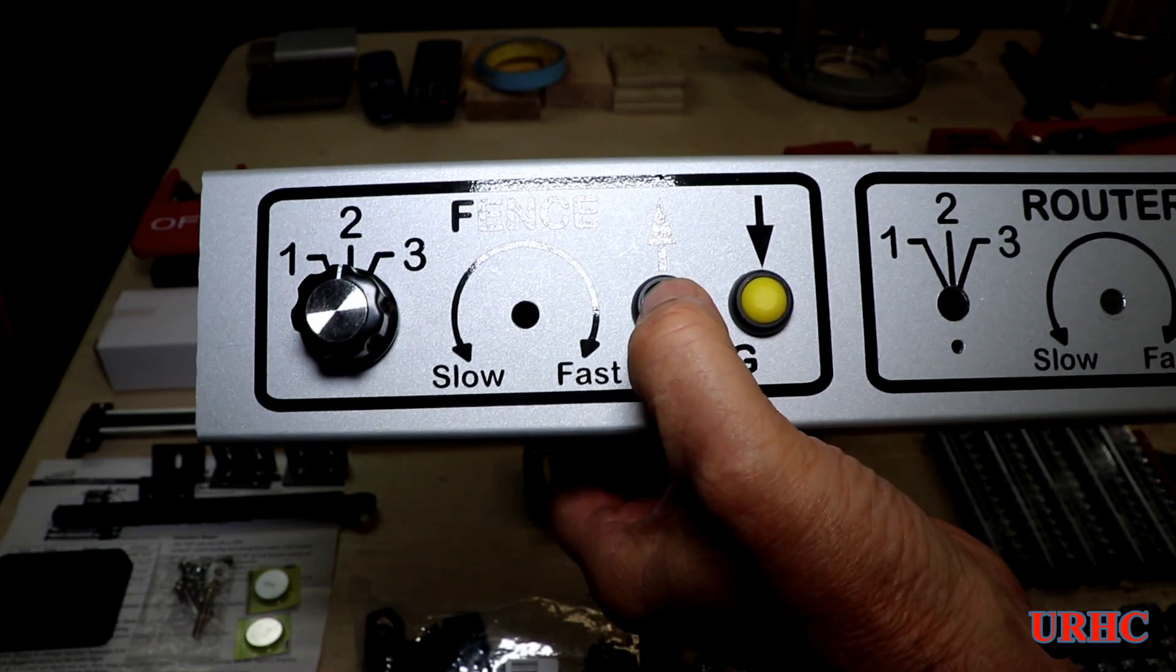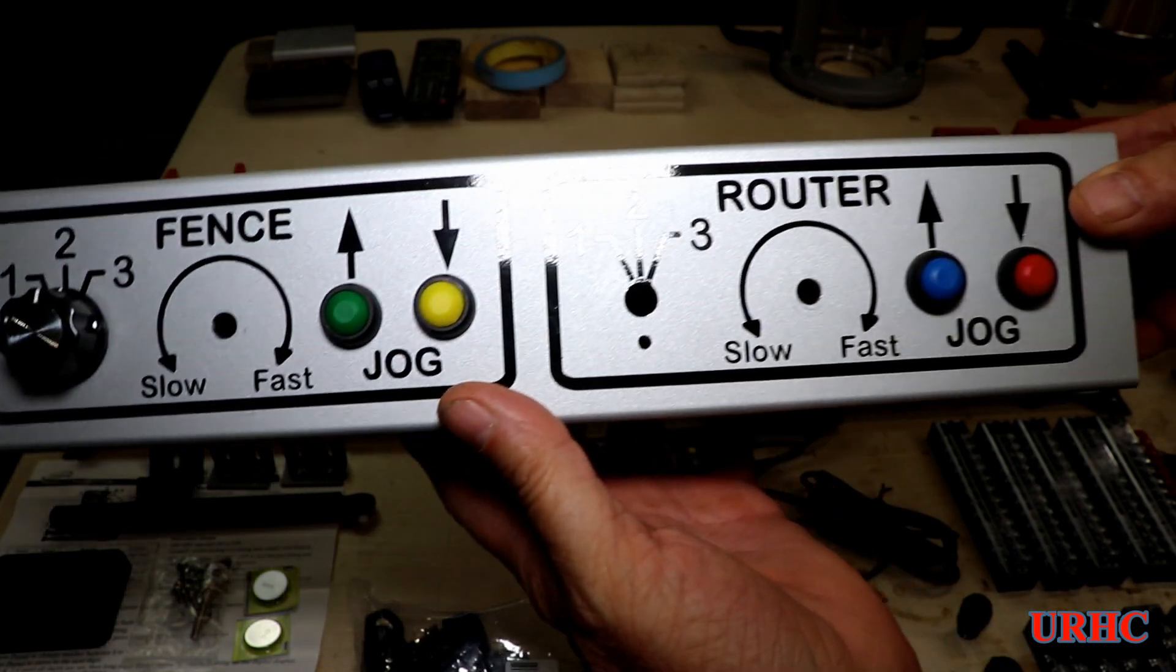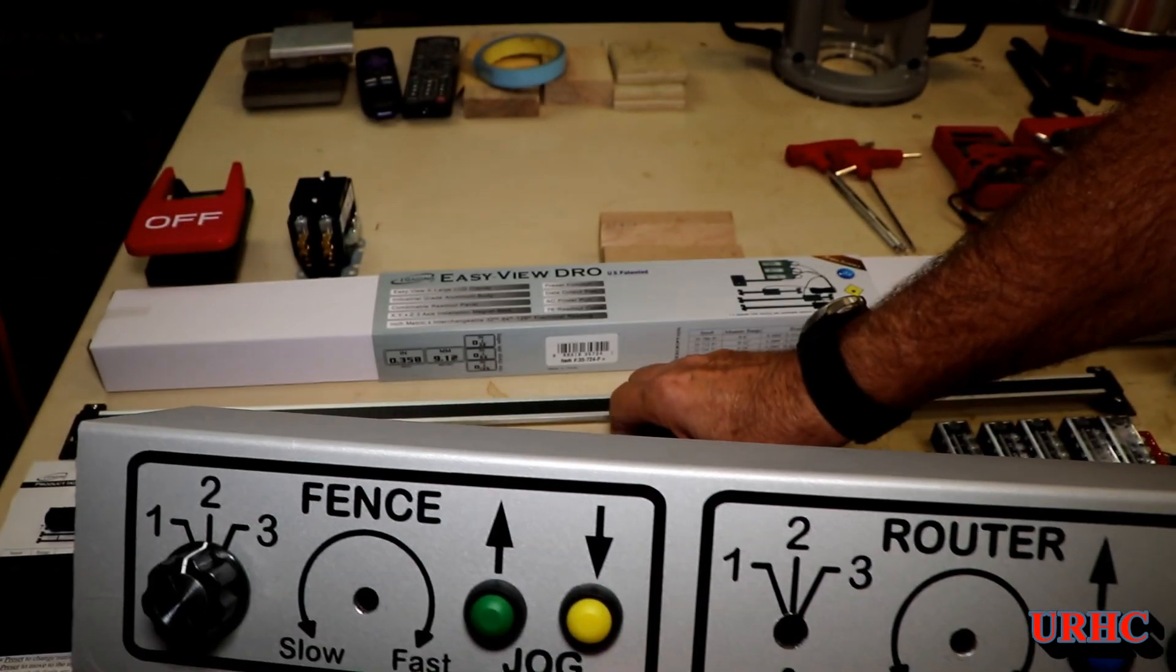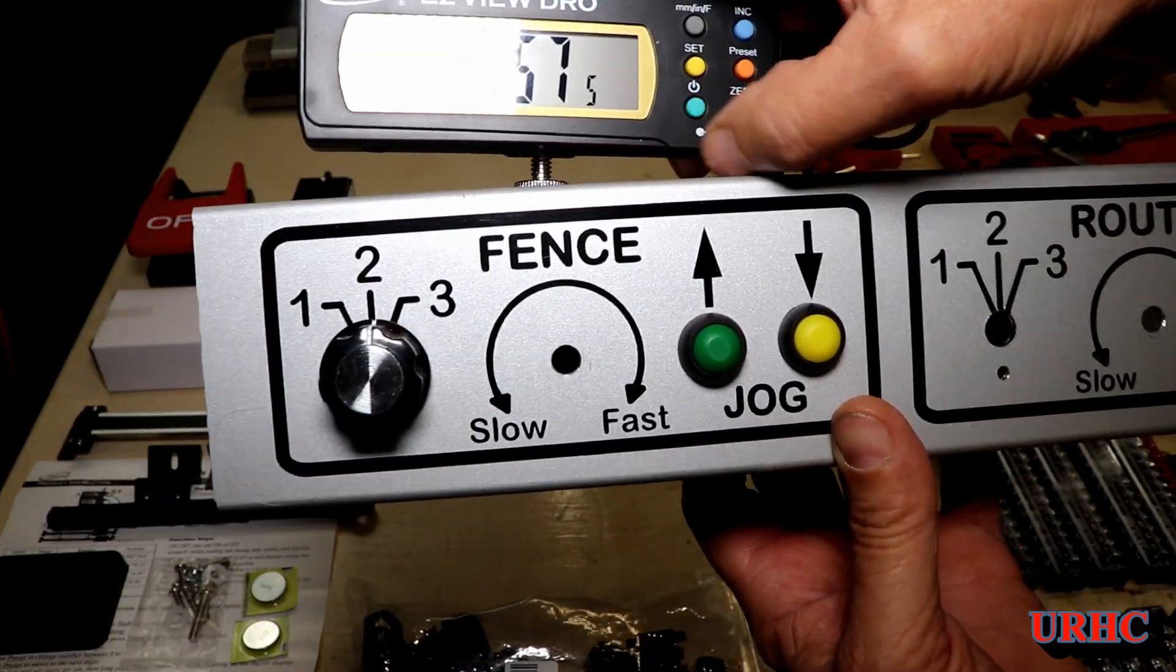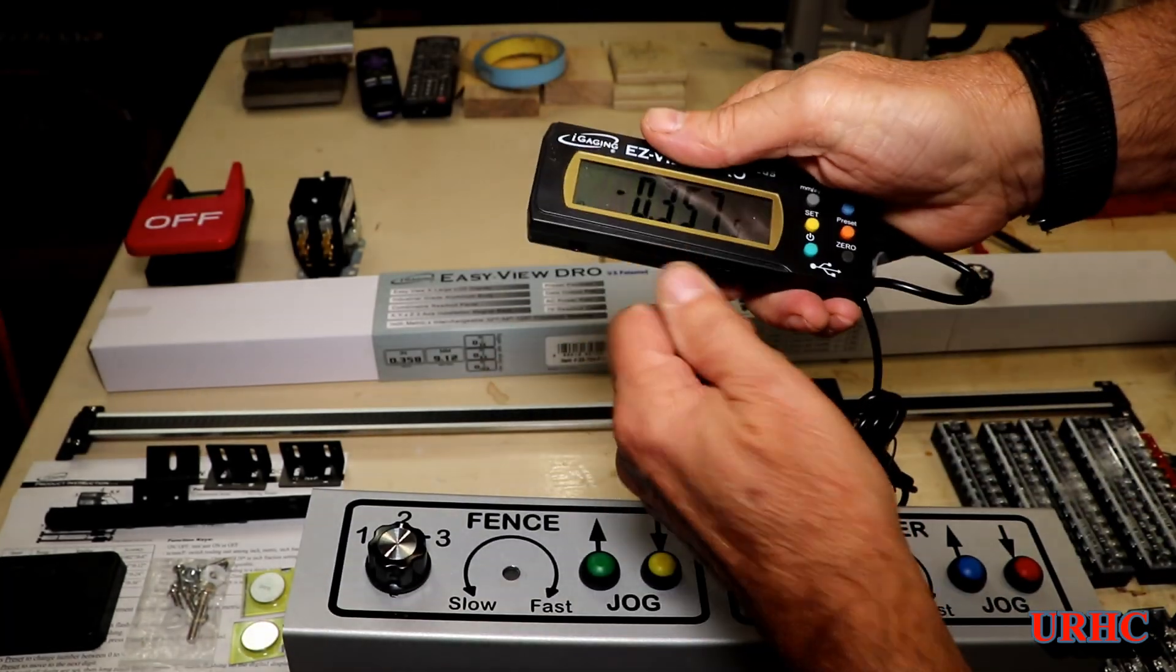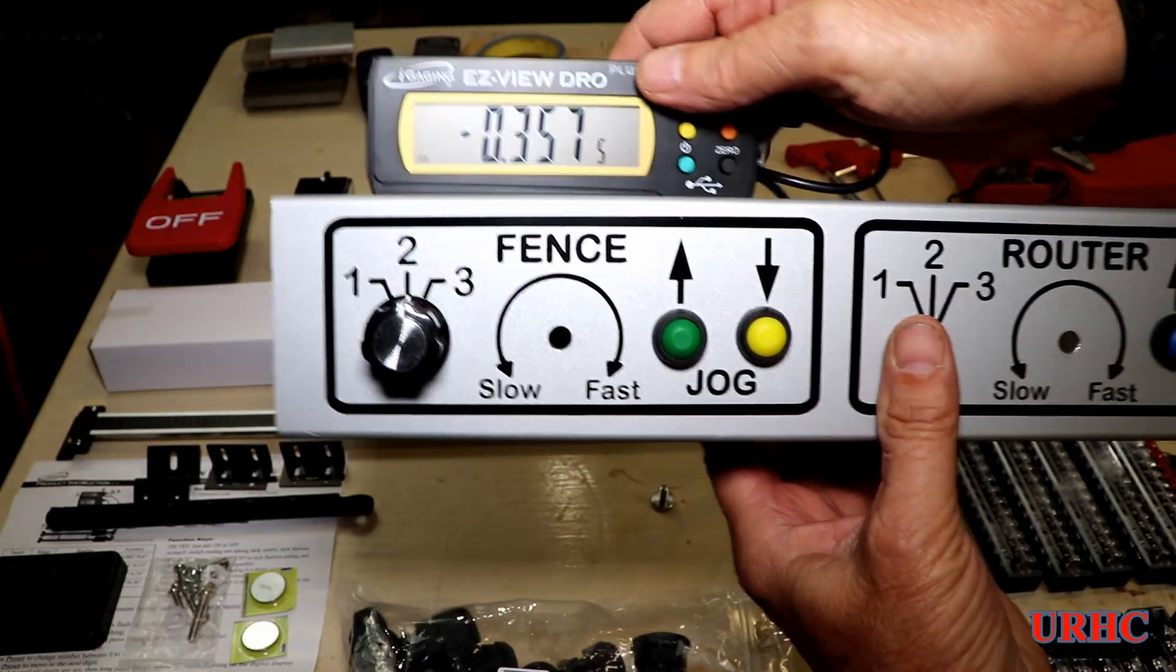You notice I have one side for the fence movement, and I decided I'm going to build my own router lift now also to match. So I'm going to have the other side for the router because MLCS never got back with me if it would work, if theirs would work with the actual Milwaukee router. So I figure I'll build one.